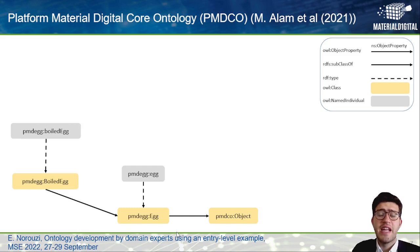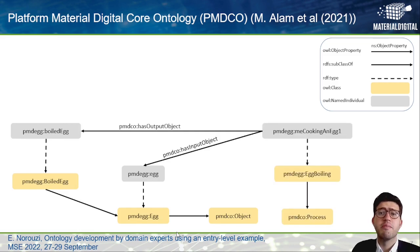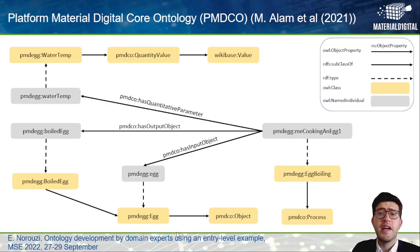Platform Material Digital core ontology is used to model the process chain and experiments. Here, egg class is introduced as a subclass of PMD core object, and the egg boiling process is introduced with the inputs, output, and some parameters.